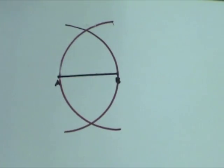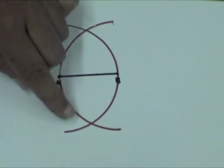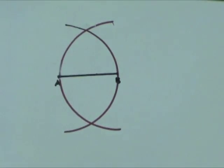There are two points of intersection. Label one of the points of intersection as C.